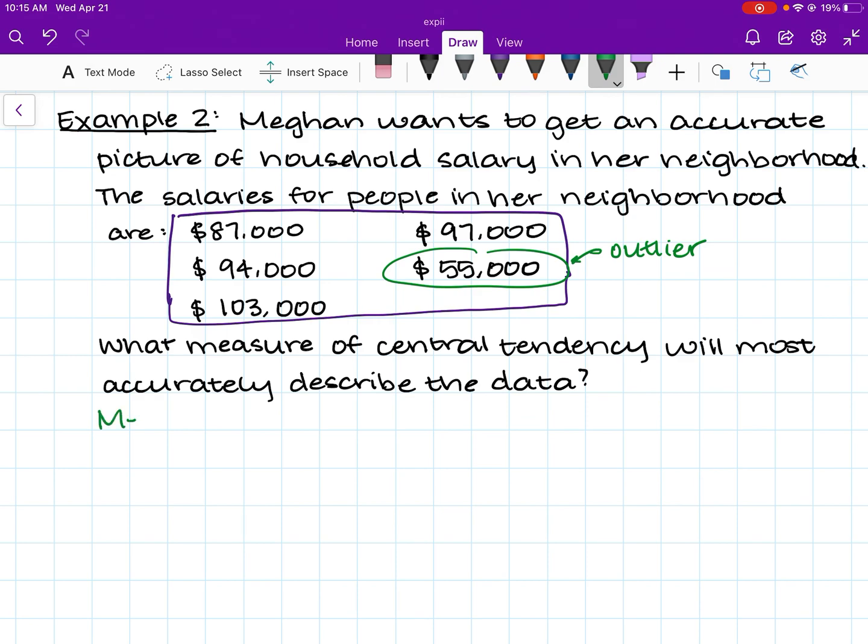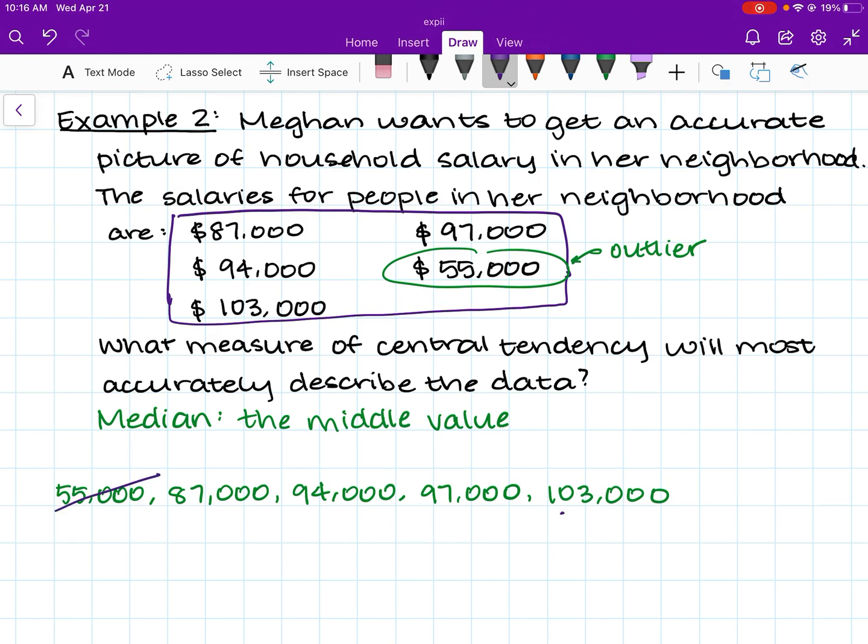So here we know we are going to be finding the median of this data set, which is the middle value. So what's the first thing we do when we're looking for the median? We put all of the data points in numerical order from least to greatest. So least value here is 55,000. Next biggest value is 87,000. After that we have 94,000. Then 97,000. And lastly we have 103,000. So in a different color, we are going to find the middle value. So we're going to cross off this value on the left and this value on the right, cross off another value on the left and another value on the right. And that means this middle value is our median. So the median of this data set is 94,000.